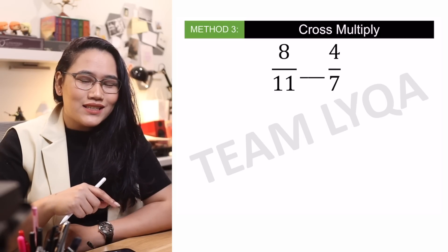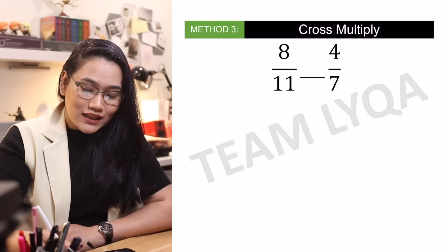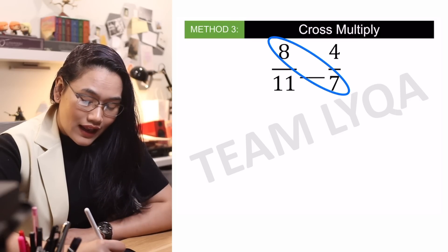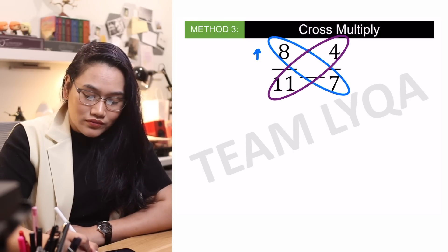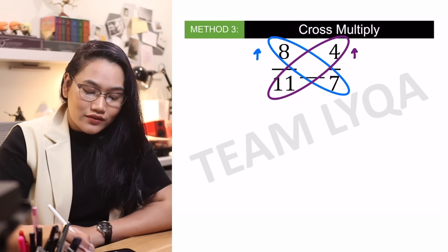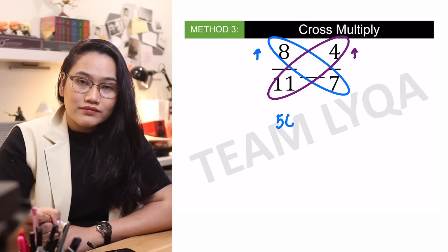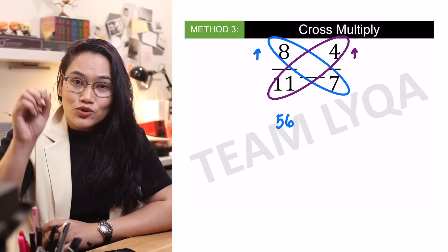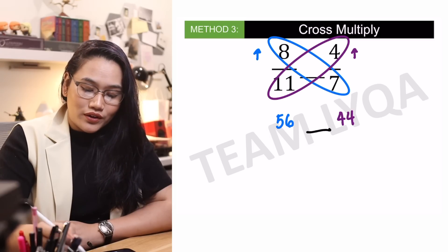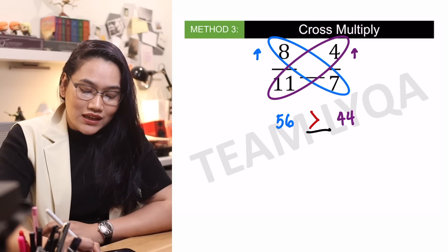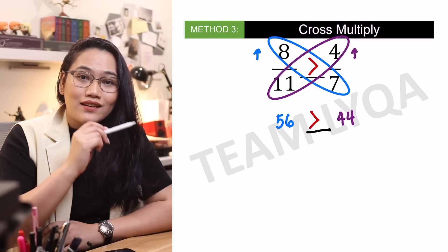Madali lang rin ito, pero marami naguguluhan kasi kung ano bang masusunod — san ba siya didikit, sino ba yung mas malaki sa left o sa right? Para mas madali at mas klaro ito, let me show you: lagi siyang across, at ang masusunod ay yung number na nasa itaas. Sa left side — the blue side — 8 times 7 is 56. And dito naman sa right side, masusunod yung nasa taas: 11 times 4 is 44. So sino mas mataas — 56 or 44? The answer would be 56. And what that means is, mas malaki rin ang 8 over 11 sa 4 over 7. Kung ano yung mas malaking side, siya ang mas malaki.